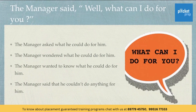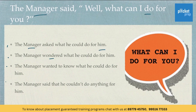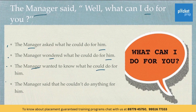Next one. The manager said, 'Well, what can I do for you?' Here are the set of options: A) The manager asked what he could do for him. B) The manager wondered what he could do for him. C) The manager wanted to know what he could do for him. D) The manager said that he couldn't do anything for him.